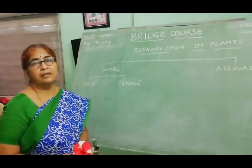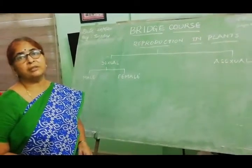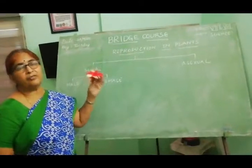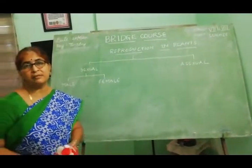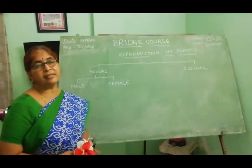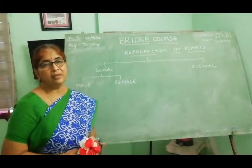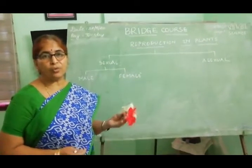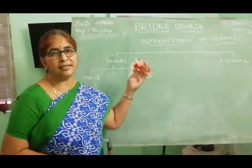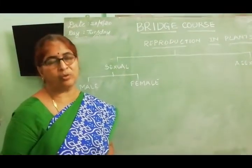Good morning children. Today we are going to learn about the reproduction in plants. Reproduction is one of the main characteristic features in all living organisms. Plants are also a part of these living organisms. Anything which grows and which dies after a certain period is called a living thing, and plants are also one such living thing.